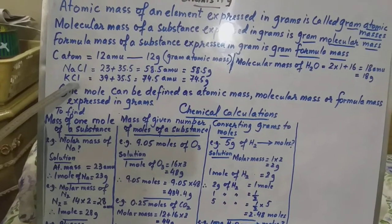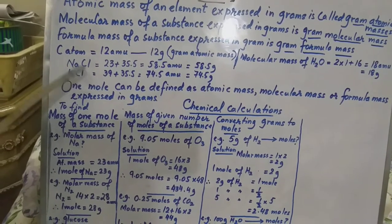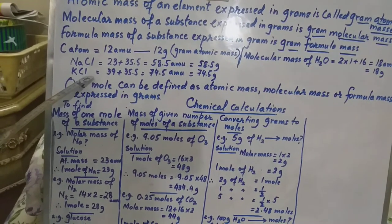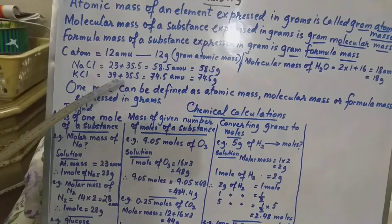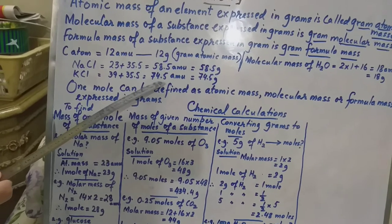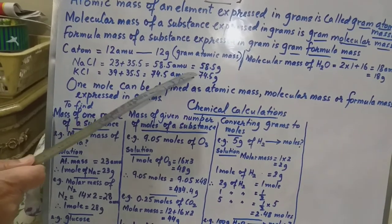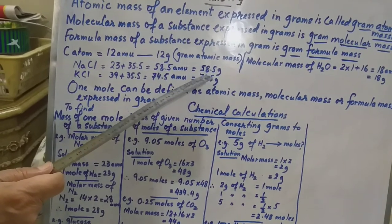This is potassium chloride, K for potassium chloride. So here you can see potassium mass is 39 and chlorine is 35.5. So it is 74.5 and it is 74.5 grams.